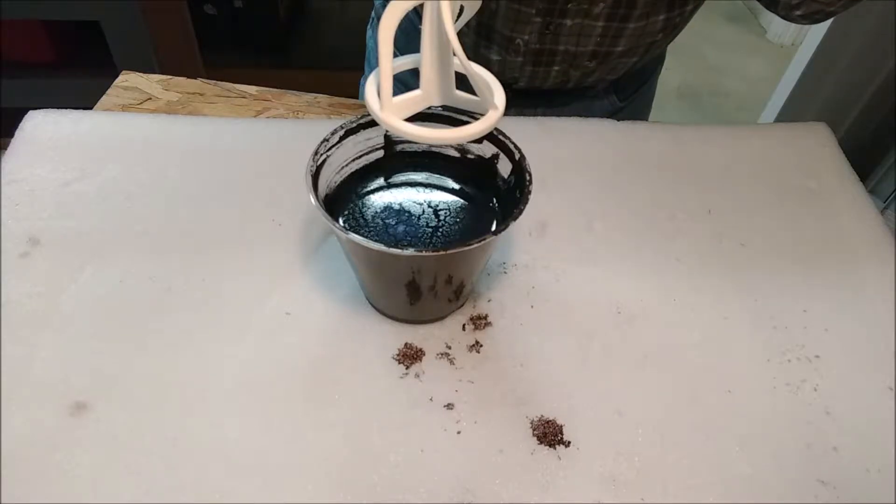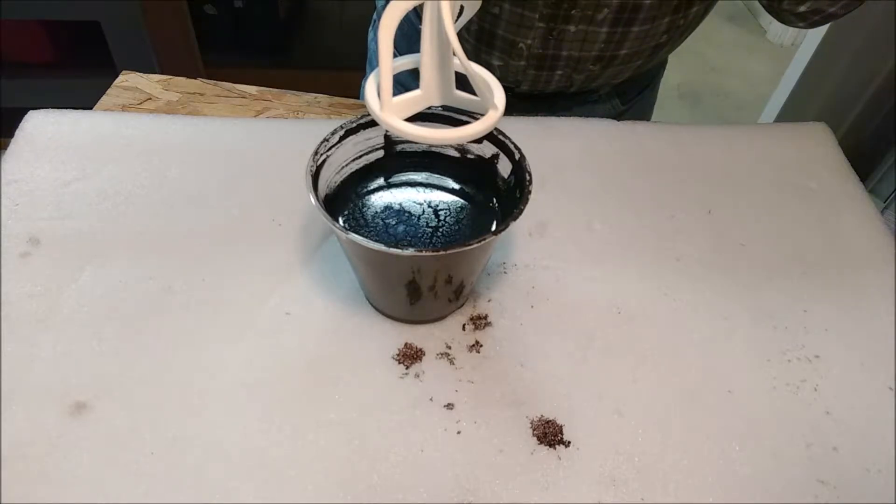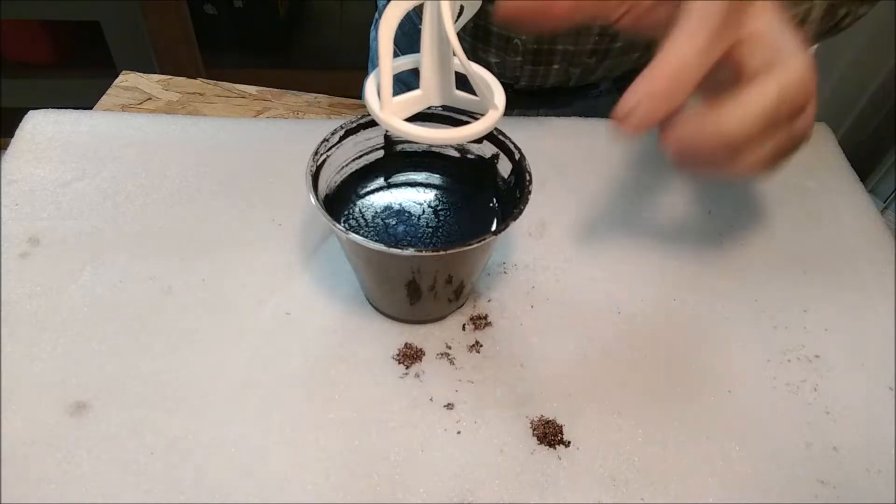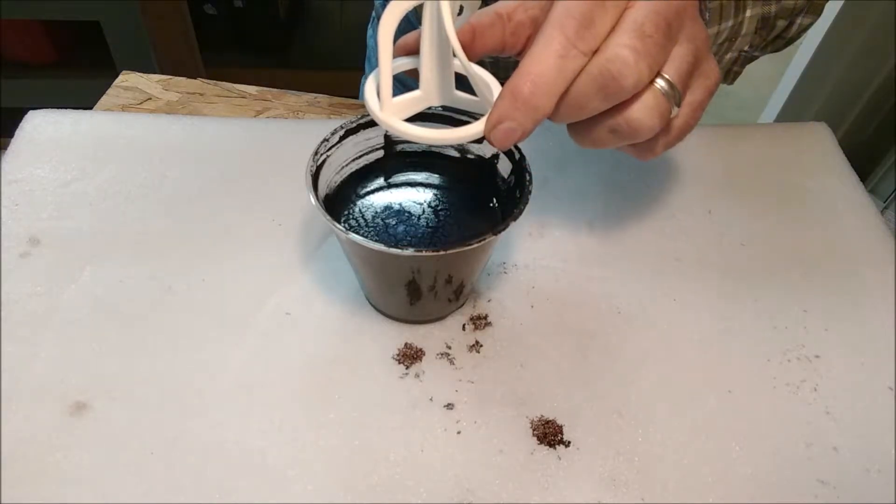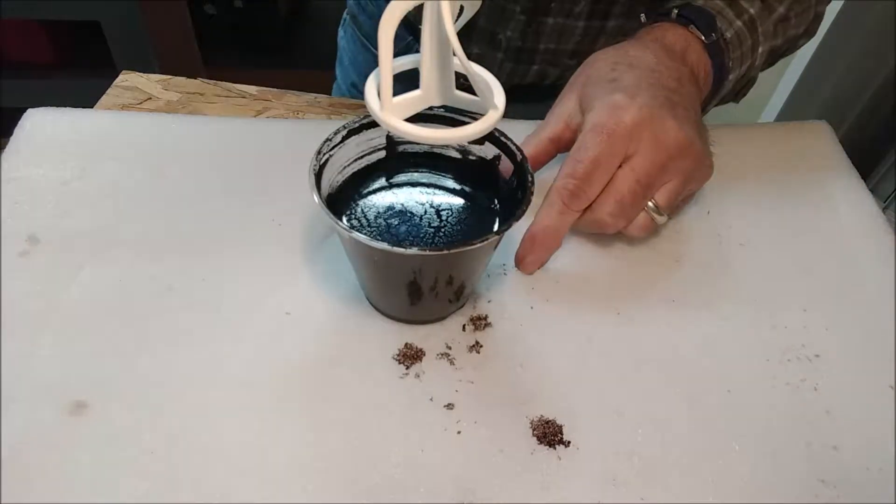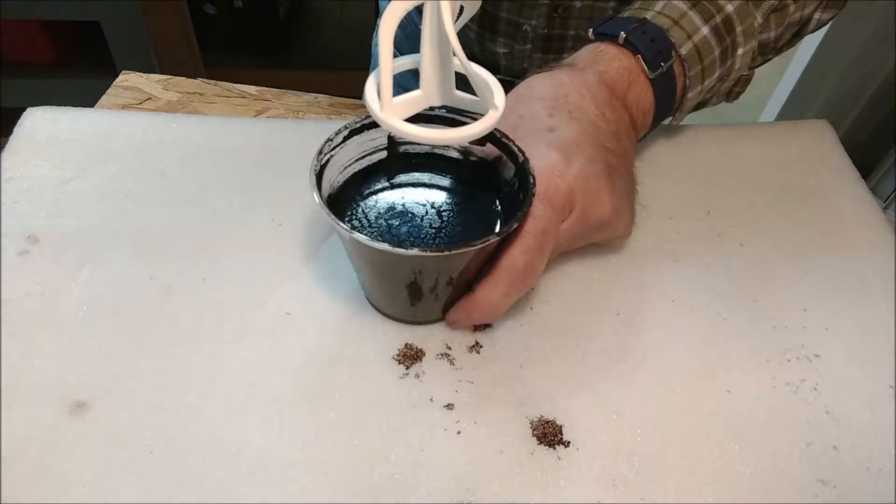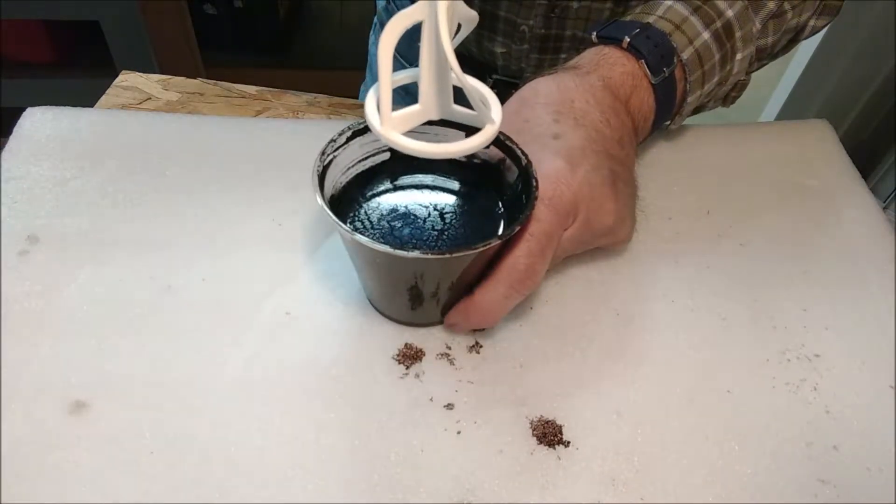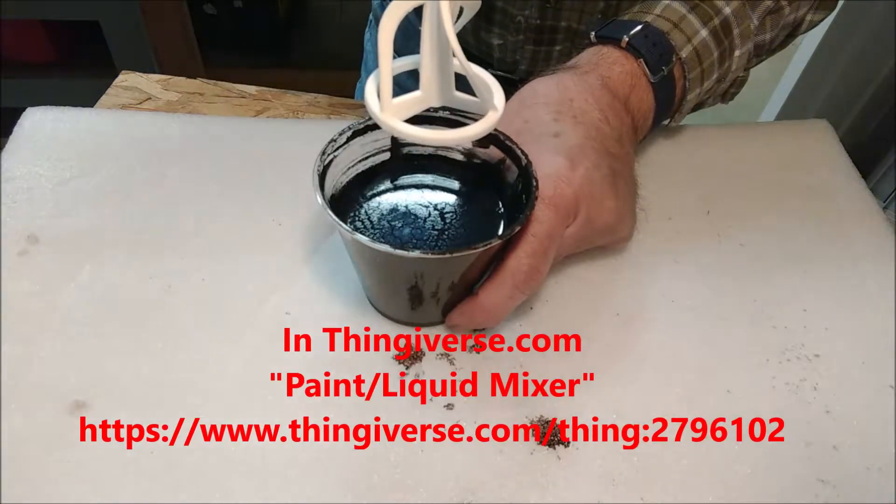So we've got this 3D printed stirrer that we found on Thingiverse. We scaled it down so that the outside diameter here of the stirrer is just a little bit smaller than the bottom of the tapered cup here. It's chucked in a drill press so I can conveniently lower it up and down.